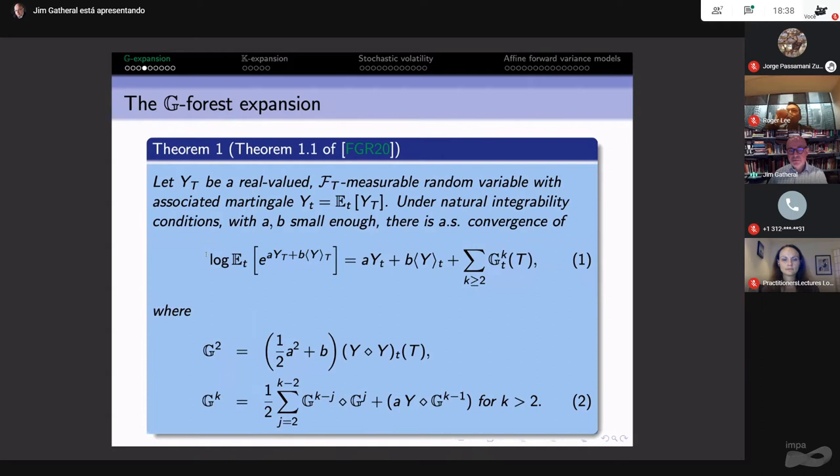This is the expansion and you see the first-order term as you would expect: A_Y valued at the current time t, and B times quadratic variation of Y evaluated at the current time, plus a bunch of correction terms. The whole idea is a formula for computing all of these correction terms. G2 is this thing, given in terms of Y diamond Y, and G of K is got from the lower-order terms.